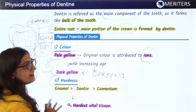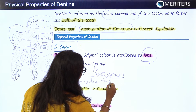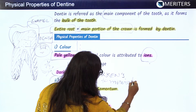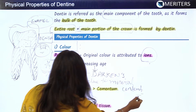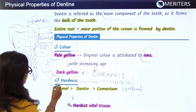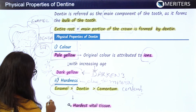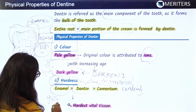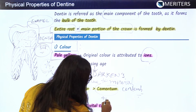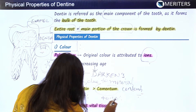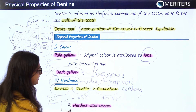The second important property of dentine is hardness. Hardness is basically the property due to mineral content. Enamel is considered the hardest tissue, followed by dentine, then cementum. Enamel contains almost 96% mineral content, followed by dentine at about 65%, and cementum at about 40 to 50%.